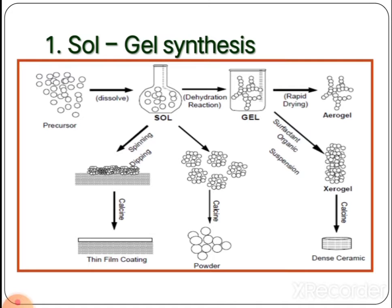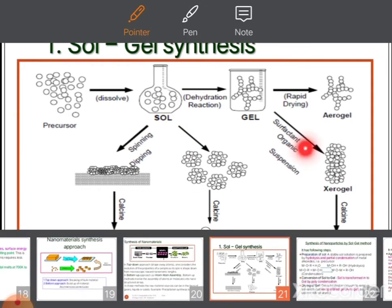The method is named 'sol-gel' because different nano forms can be obtained starting from either the sol or through gelation. The sol and gel stages are used for different types of alkoxide-based nano metals, as explained in the process flowchart. There are two directions: sol is one direction for synthesis of nano materials, and gel is another direction.